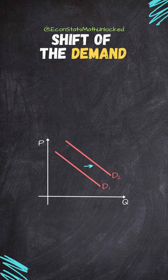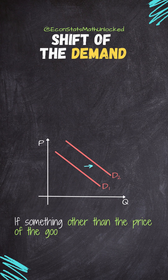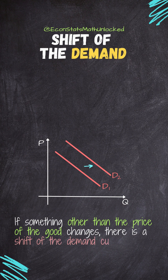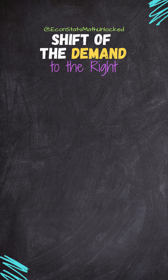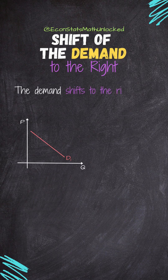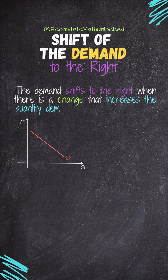What shifts demand? If something changes other than the price of the good itself, the demand curve will shift. What shifts the demand curve to the right? The demand shifts to the right when there is a change that increases the quantity demanded at every price.